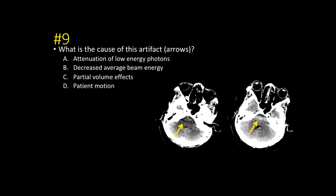Number nine: what is the cause of this artifact? We've seen this already with the osteoma case — it's beam hardening artifact. The cause is that all the low-energy photons are attenuated, leaving only high-energy photons that pass straight through, creating the artifact.